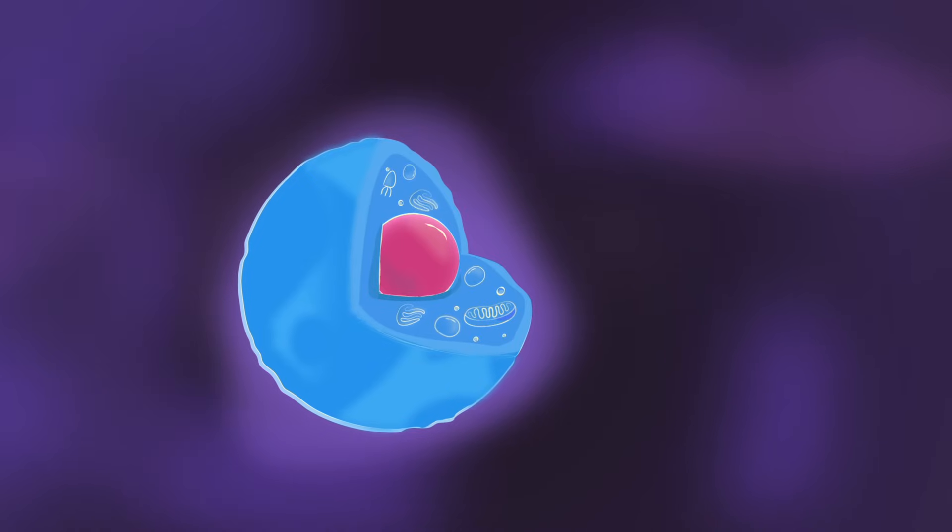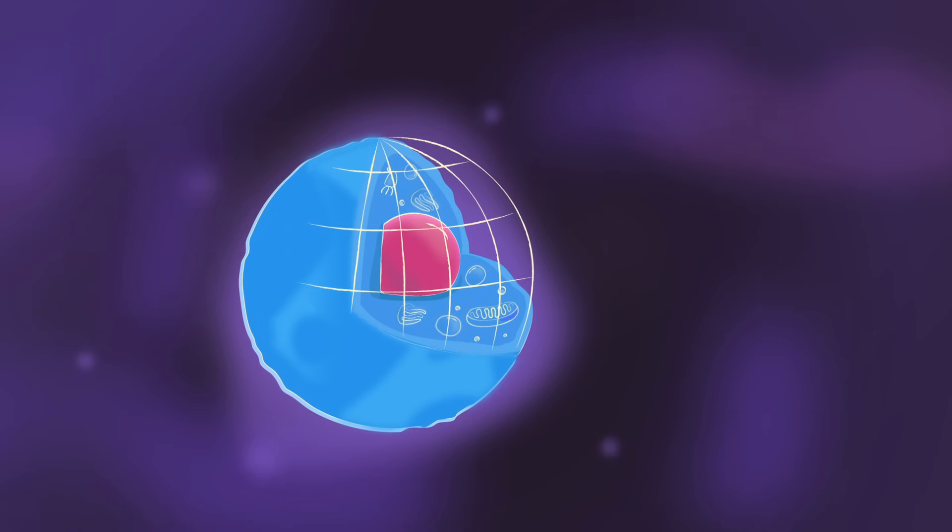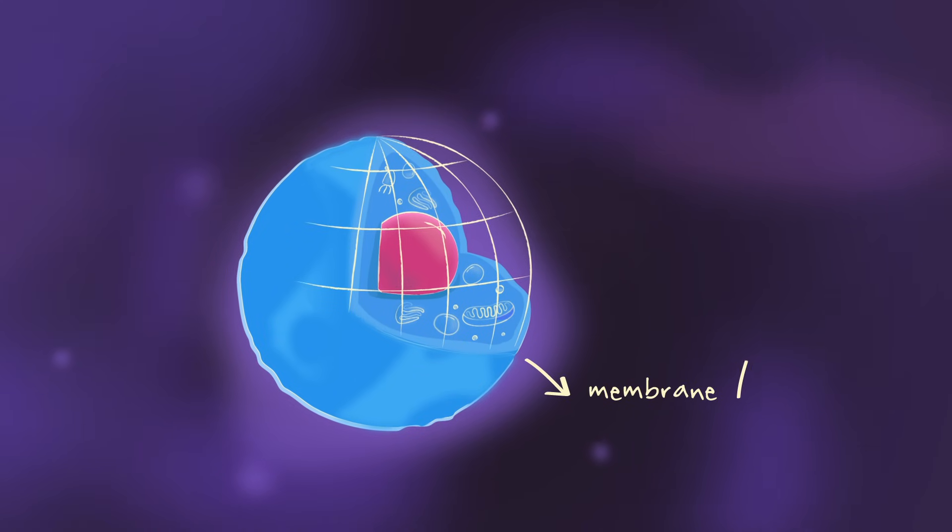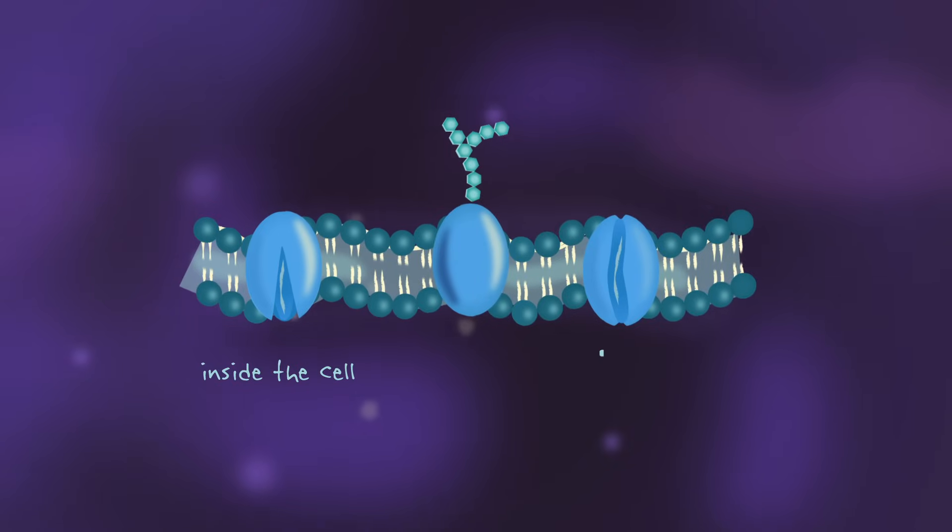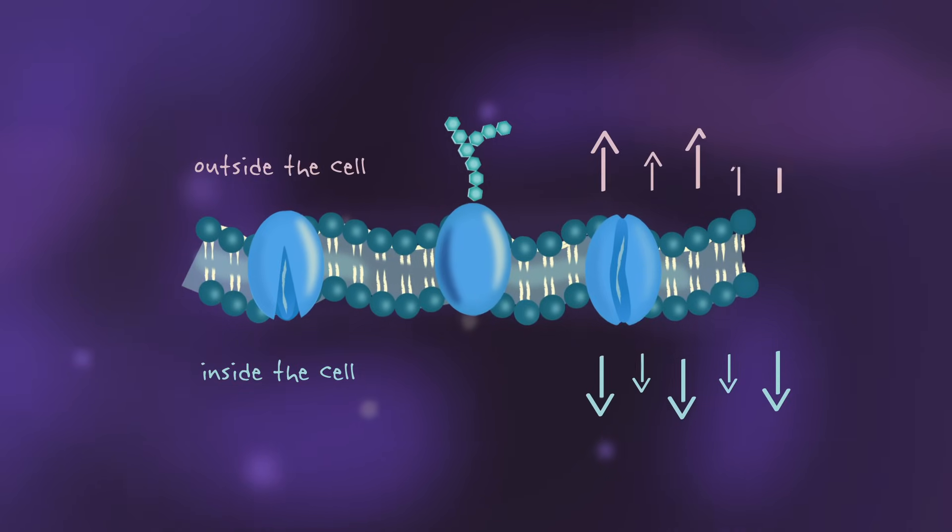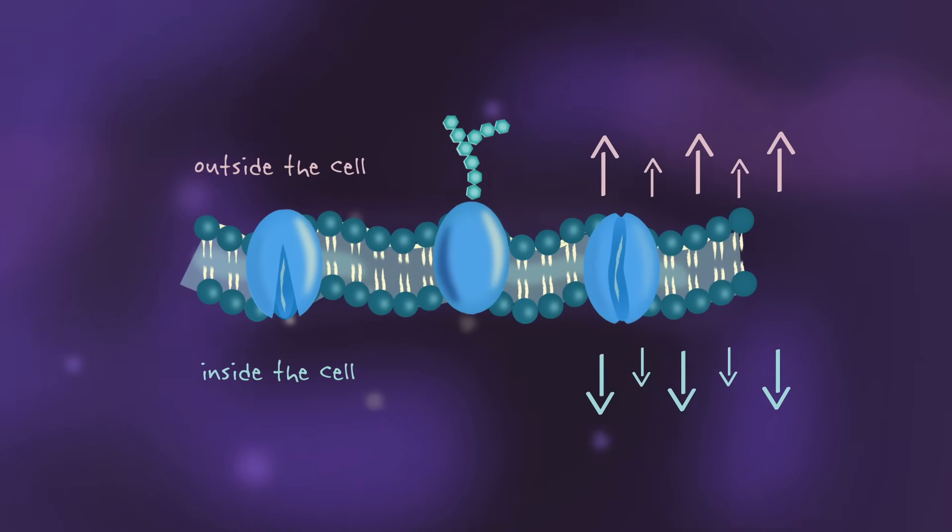This is where most of the cell's functions occur, enclosed by a cellular membrane that acts as the doorway into and out of the cell. Any resources the cell needs to consume, or waste products it needs to expel, first have to pass through this membrane.